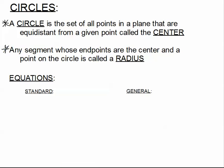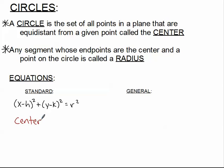Any segment whose endpoints are on the center and the circle would be called a radius. So there are two main points for a circle: the center and the radius. The standard form is (x − h)² + (y − k)² = r². The center is always an ordered pair, and from standard form that ordered pair is (h, k). H comes from the parentheses where the x is, and k comes from the parentheses where the y is.